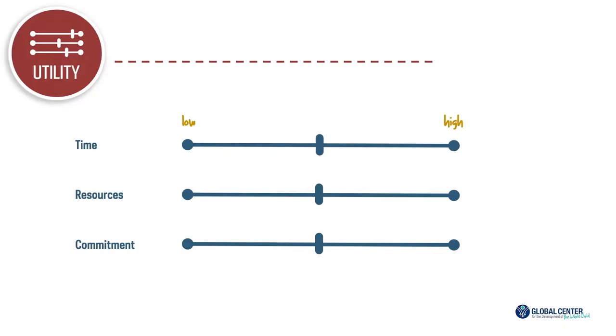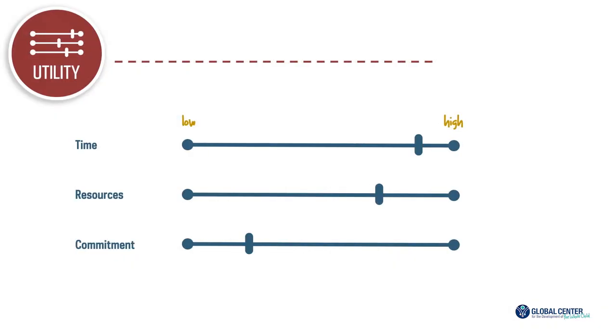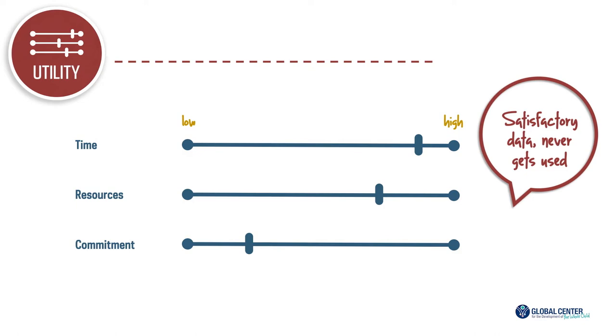The next situation is where we have quite a lot of time, a moderate amount of resources, but very low commitment from stakeholders, policy makers, or senior leadership. I've seen this happen when we collect monitoring data. Because monitoring data is linked to indicators we report to donors, it's written into our grants and proposals. We normally allocate sufficient time, have the right people, and the right budget. But because senior leadership and partners are stretched thin across multiple programs, the monitoring data just becomes something else that needs to happen and doesn't get used to make programmatic decisions. So we get satisfactory data that sits on a shelf and does not get used.